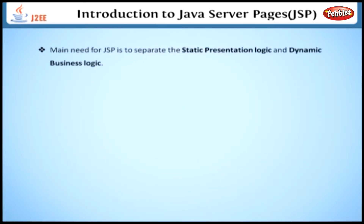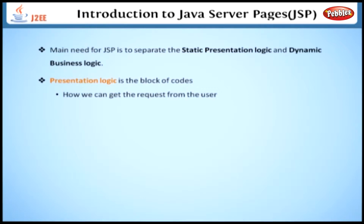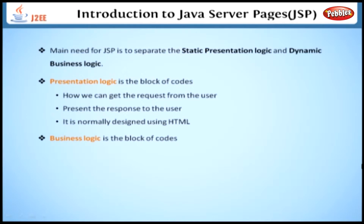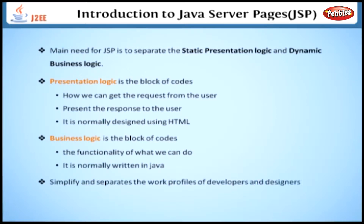One of the main needs for JSP is to separate the static presentation logic and dynamic business logic. Presentation logic is the block of codes that defines how we can get the request from the user and present the response to the user — it is normally designed using HTML. Business logic is the block of codes that describe the functionality that we can do, and it is normally written in Java. So we simplify and separate the work profiles of developers and designers.